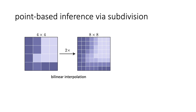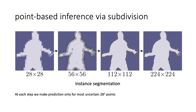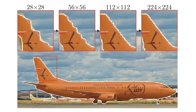Here is how the inference procedure works in detail. Starting from a coarse 4×4 prediction, we upsample using bilinear interpolation. Even if the coarse prediction contained only certain probabilities, after bilinear interpolation there will be points with uncertain predictions — we select a set of such points. For each selected point, we refine its prediction independently using a lightweight multilayer perceptron. This allows us to quickly increase resolution by predicting only for points where the coarse mask is insufficient. You can see how the mask for the wing of a plane gradually improves as we increase resolution.